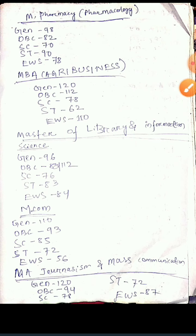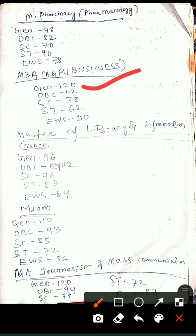Hi everyone. I am going to share how many marks you are required to carry to compulsorily get a seat in Central University of Punjab. Previously I also made videos — you can go through my channel to see how many marks you required to get a seat in Central University of Tamil Nadu, Central University of Haryana and Central University of Rajasthan. And now in this video I will show you the marks required to get a seat in Central University of Punjab.